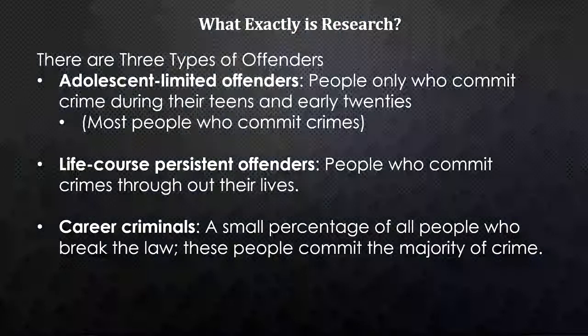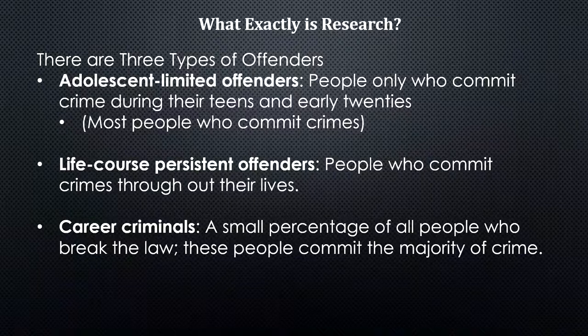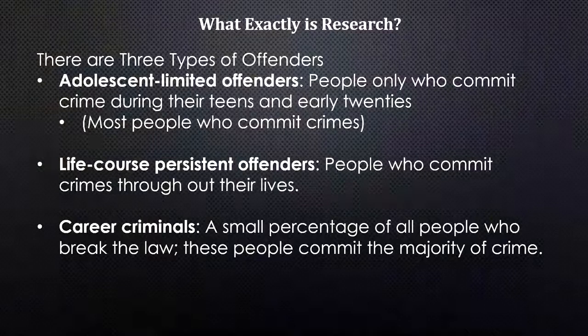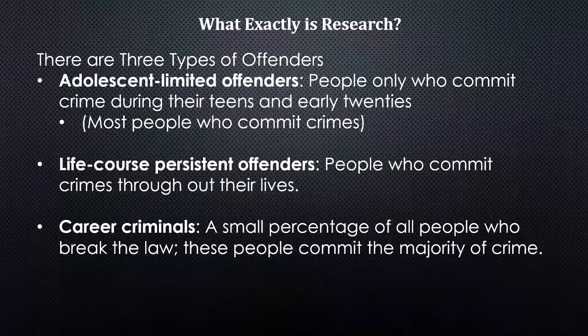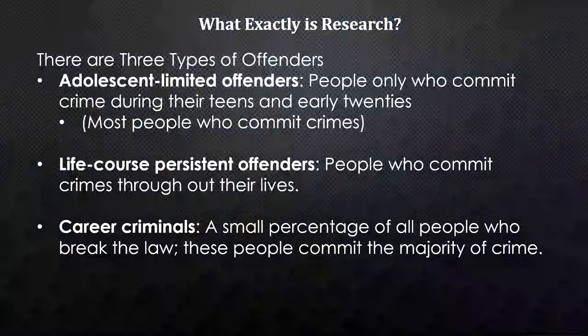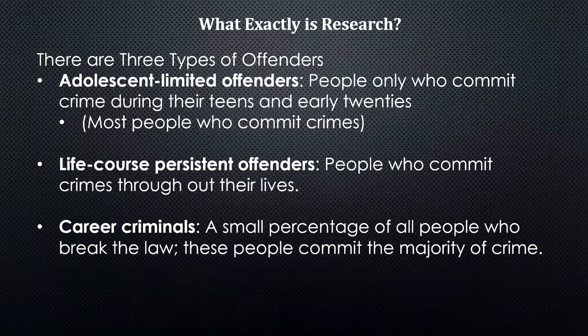Life course persistent offenders are people who commit crimes throughout their life, and that is the minority of people who commit crimes. Within that group, we have career criminals — a small percentage of all people who break the law. These people commit the majority of crime in our society. We all know someone, or are someone, who did some things when young and stupid, but that doesn't necessarily make us a criminal the way society sees it.